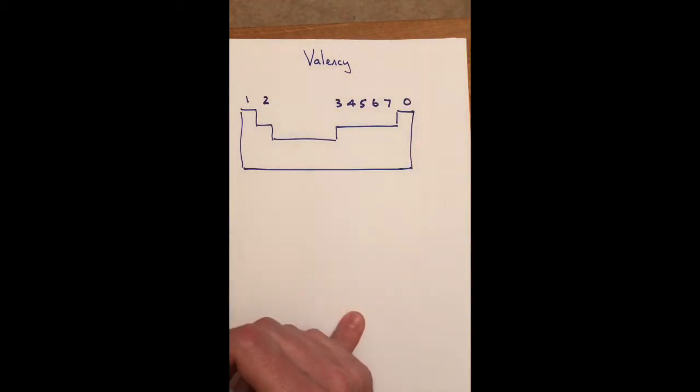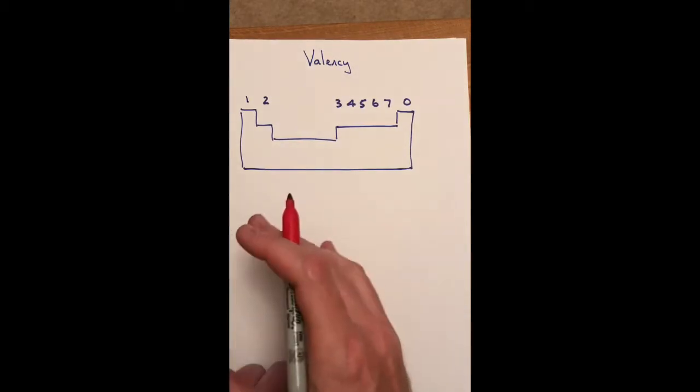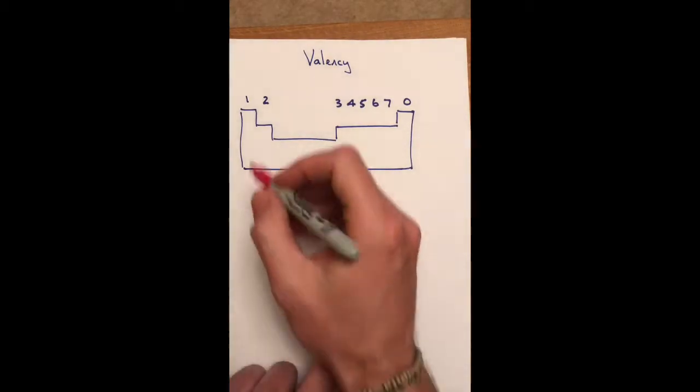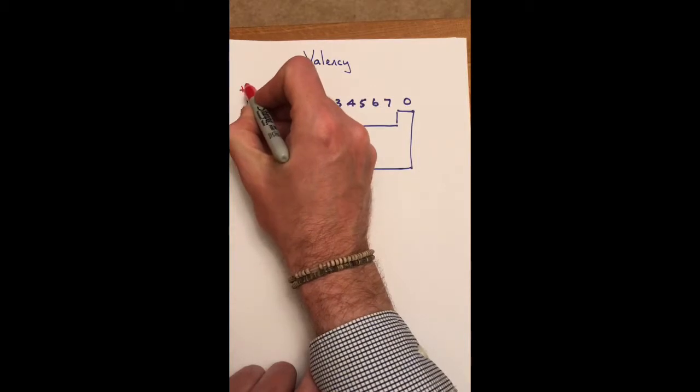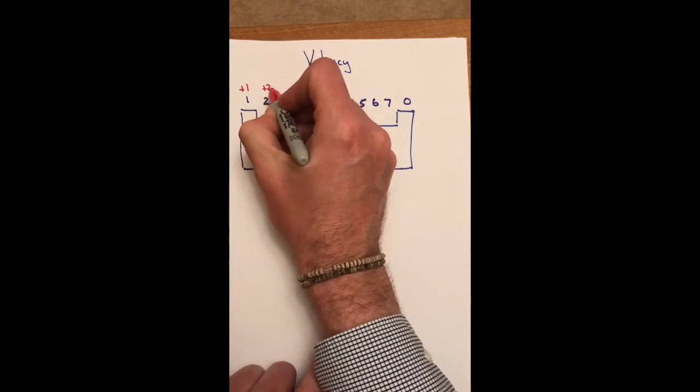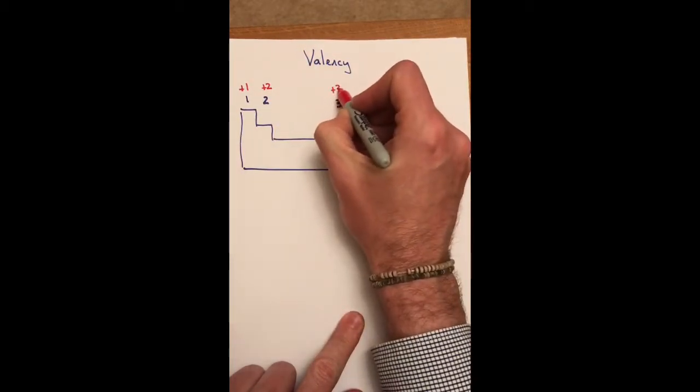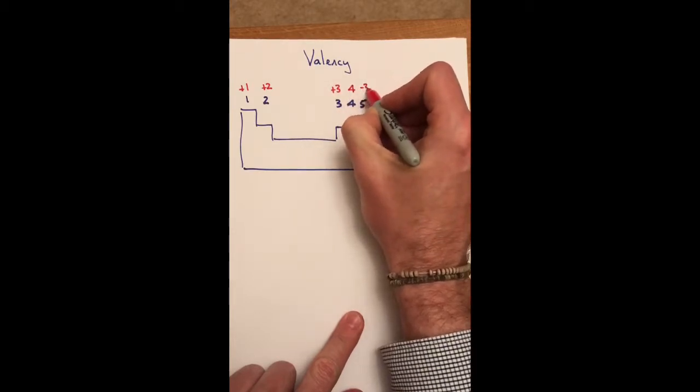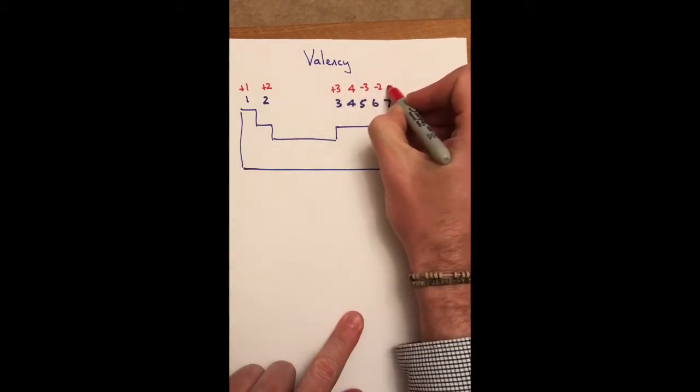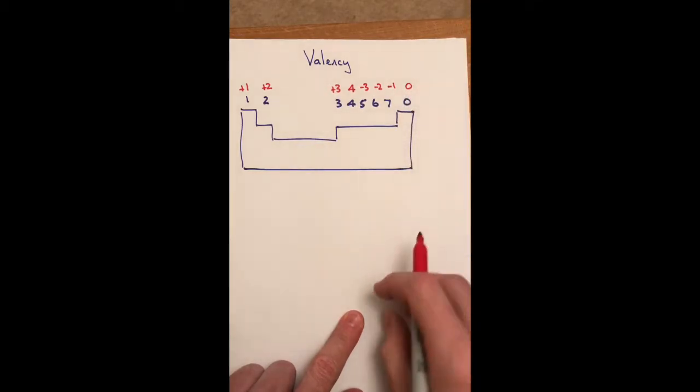The first thing you should do, my advice to you when you get in an exam situation and you open your paper up, you will have a periodic table in there. The first job is above these, write down plus one, plus two, plus three, four, minus three, minus two, minus one, and zero.